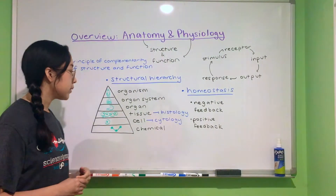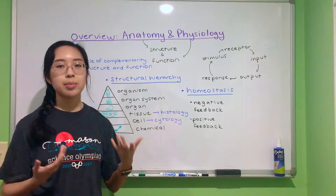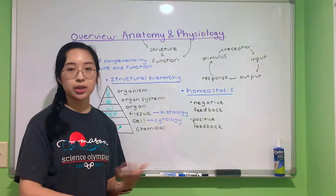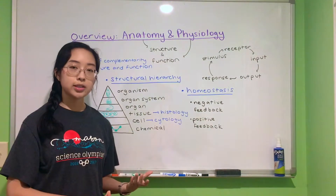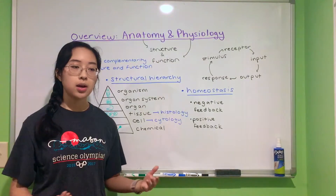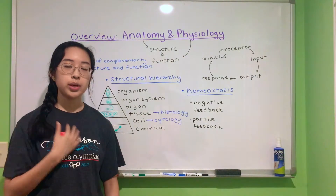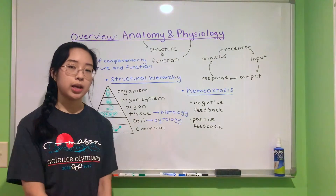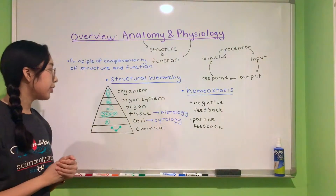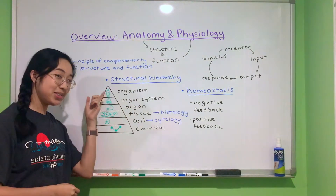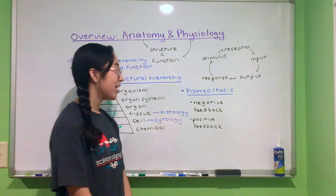The typical number of tissue types in any particular organ is usually above four. Organs you're probably already familiar with include the brain, the heart, the stomach, and the skin — which is actually the largest organ in the body. Organ systems are groups of organs that come together to perform a specific unified function: for example, the cardiovascular system promotes the flow of fluid, waste, nutrients, and oxygen throughout the body, whereas the endocrine system secretes hormones to regulate body functions. Finally, all these components come together to form the organism as a whole.